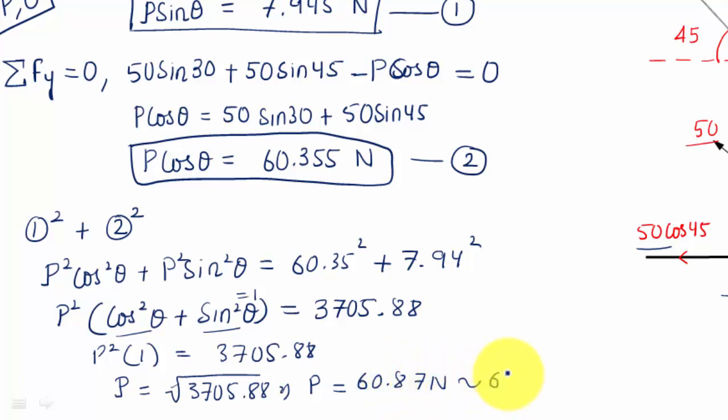Now we want to know at what angle this P is acting. For that, we're going to divide equation one by equation two. P sine theta over P cos theta equals 7.945 divided by 60.35.